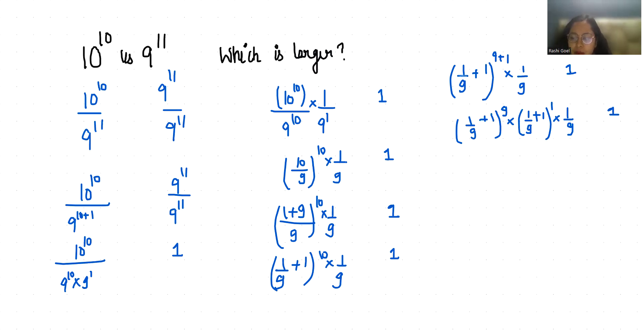According to the rule, 1 plus 1 by n power n is equal to e. N can be any number, approaching infinity. So our value of e is 2.716, approximately 3.